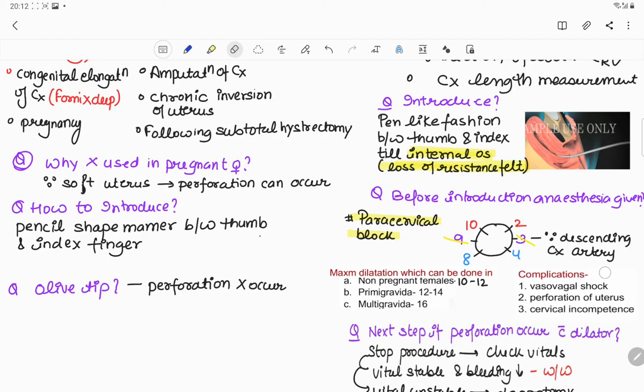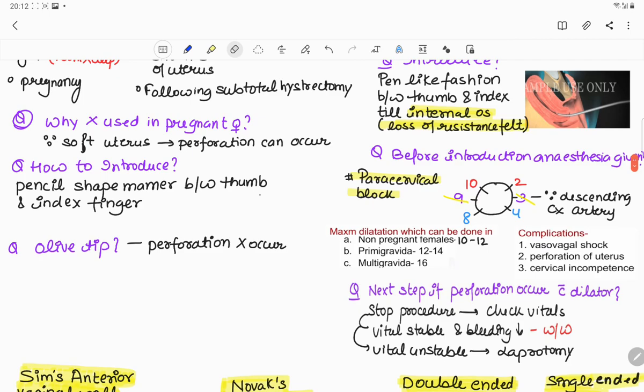Complications following dilatation can be perforation of the uterus, vasovagal shock, or cervical incompetence. What will be the next step if perforation occurs with the dilator? We immediately need to stop the procedure and check the vitals of the patient. If vitals are stable and bleeding is less, then we need to wait and watch and observe the patient. But if vitals are unstable, then evaluation of abdominal cavity needs to be done by laparotomy.